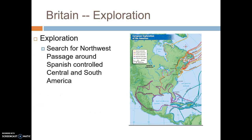Britain's exploration. This is a map of explorers from Spain, France, the Dutch, and the English. The Spanish explorers got the earliest start and they explored the Caribbean islands, the Gulf of Mexico, Mexico, and Florida. They conquered and claimed this area very early.